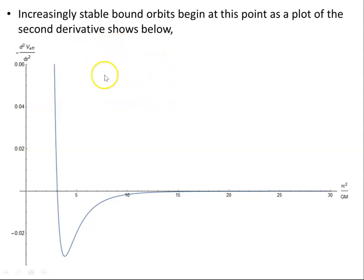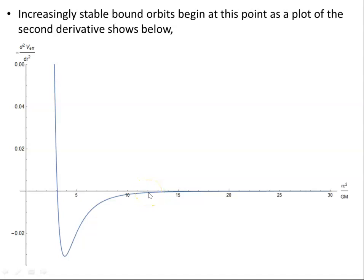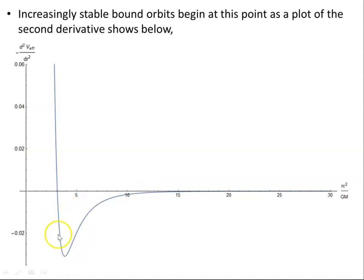If we plot the second derivative — actually I'm plotting the negative of the second derivative so the plot is shaped this way — from about 14 units of GM/c² onwards in natural units, it's essentially zero. So from about 13 to 14 units onwards it's roughly zero. Bound orbits in that region are marginally stable because the second derivative is close to zero, but clearly at smaller radii they're not stable because it's not close to zero there.